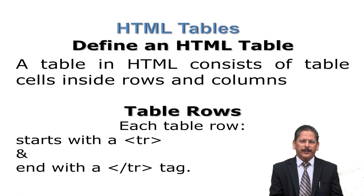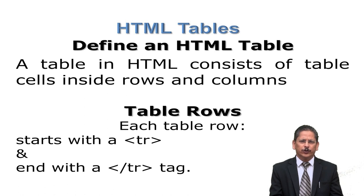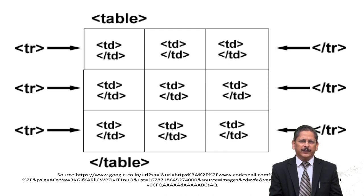In each row we have three cells, and these cells will be encapsulated under TD and slash TD tags. You can see three different cells: TD slash TD, TD slash TD, and TD slash TD. Inside these TD tags we will write the table data. In this slide, we have blank cells because we are not writing anything inside the TD tag.